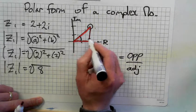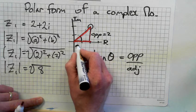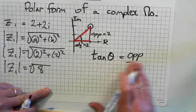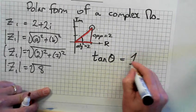So opposite is this one here, which is 2. Adjacent is 2. So tan theta is equal to 2 over 2, which equals 1.